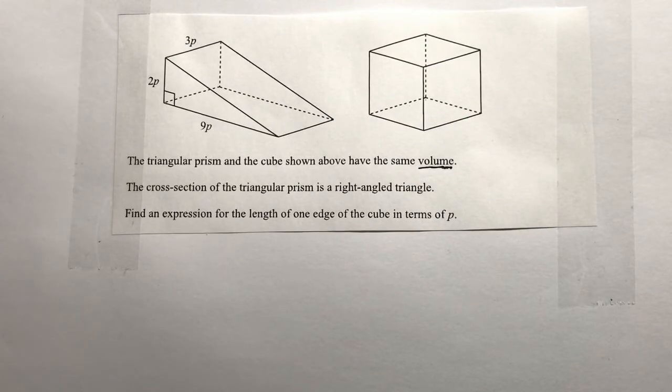Find an expression for the length of one edge of the cube in terms of p. Let's not worry about that too much and just concentrate on this first line and look at working out the volume of the triangular prism.